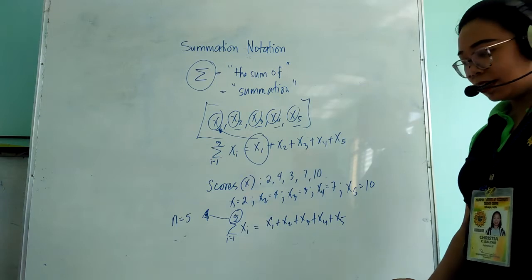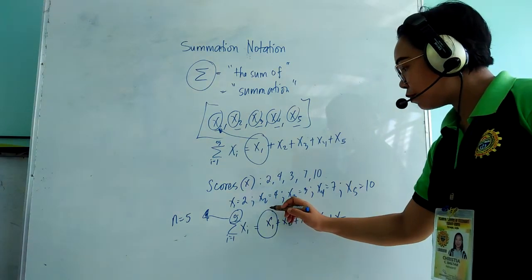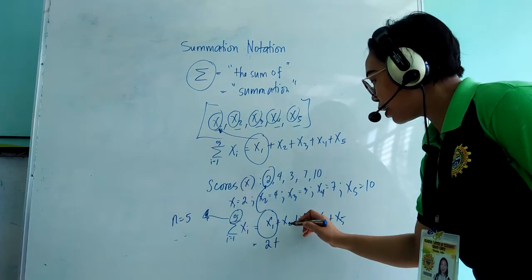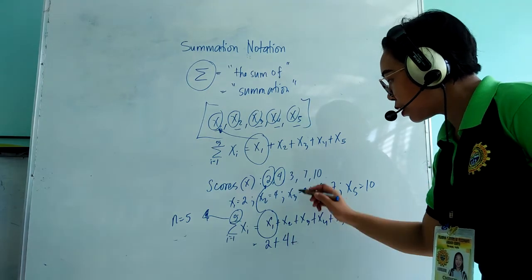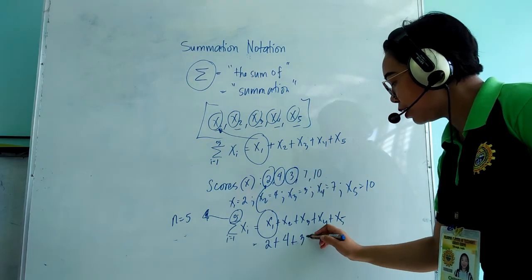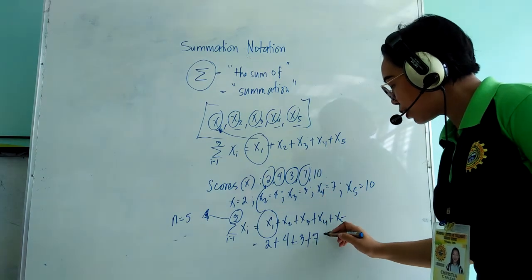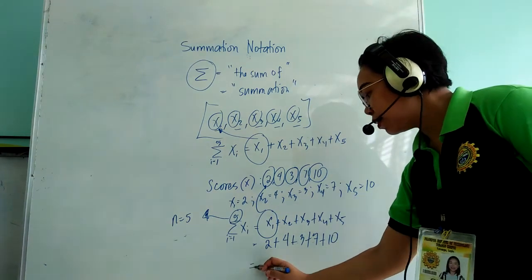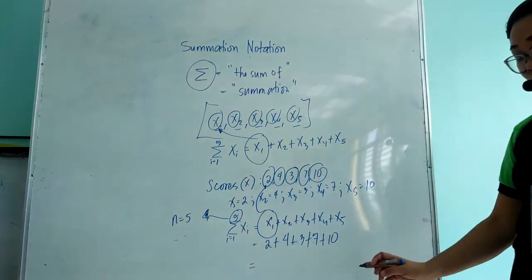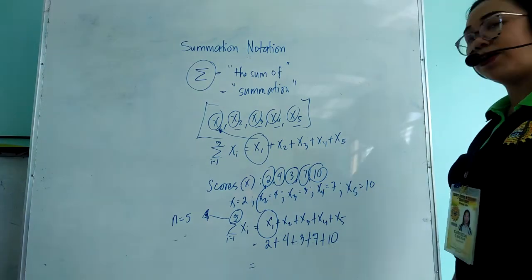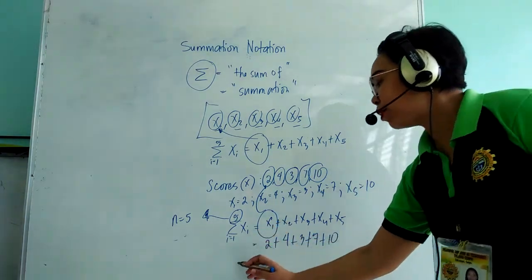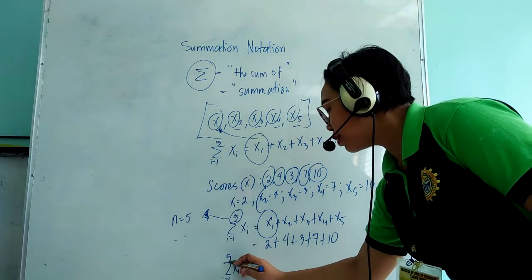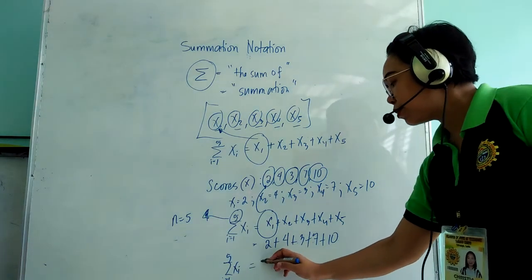So x₁ refers to your first observation, which is 2. Then x₂ is 4, x₃ is 3, x₄ is 7, and x₅ is 10. You may use a calculator to get the sum, or you may add it manually or mentally. So the sum of xᵢ from i=1 to 5 is equal to 26.